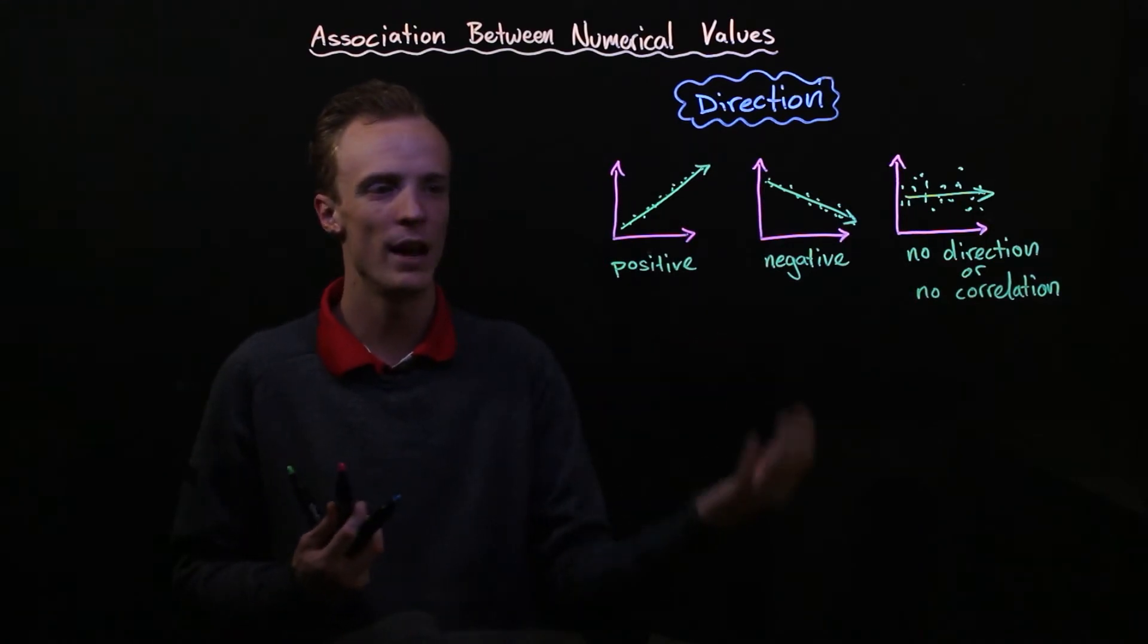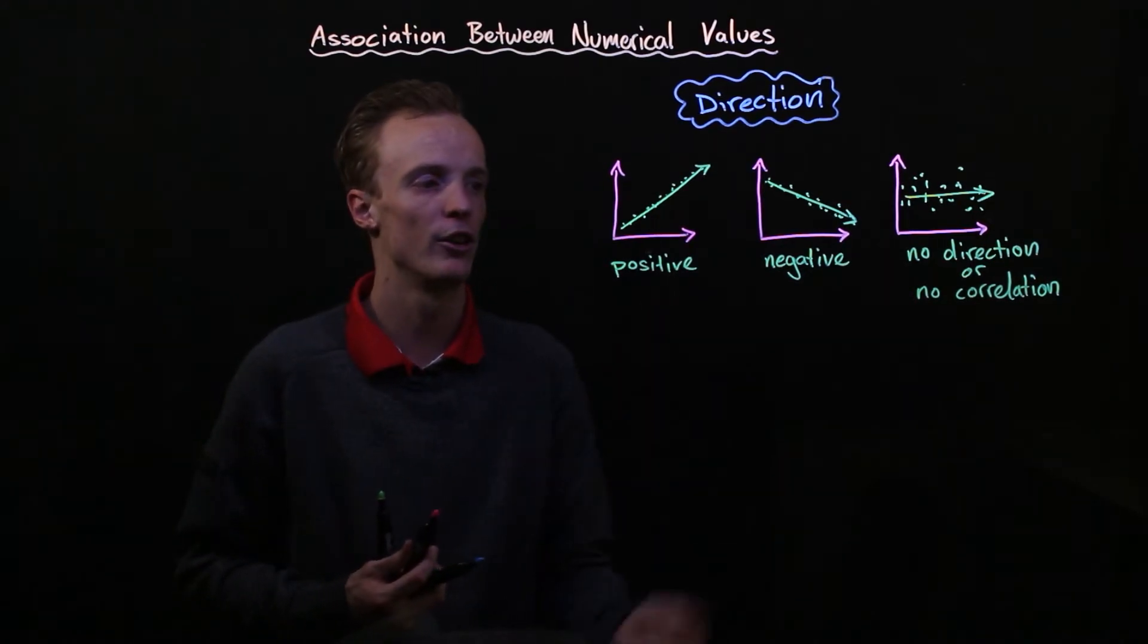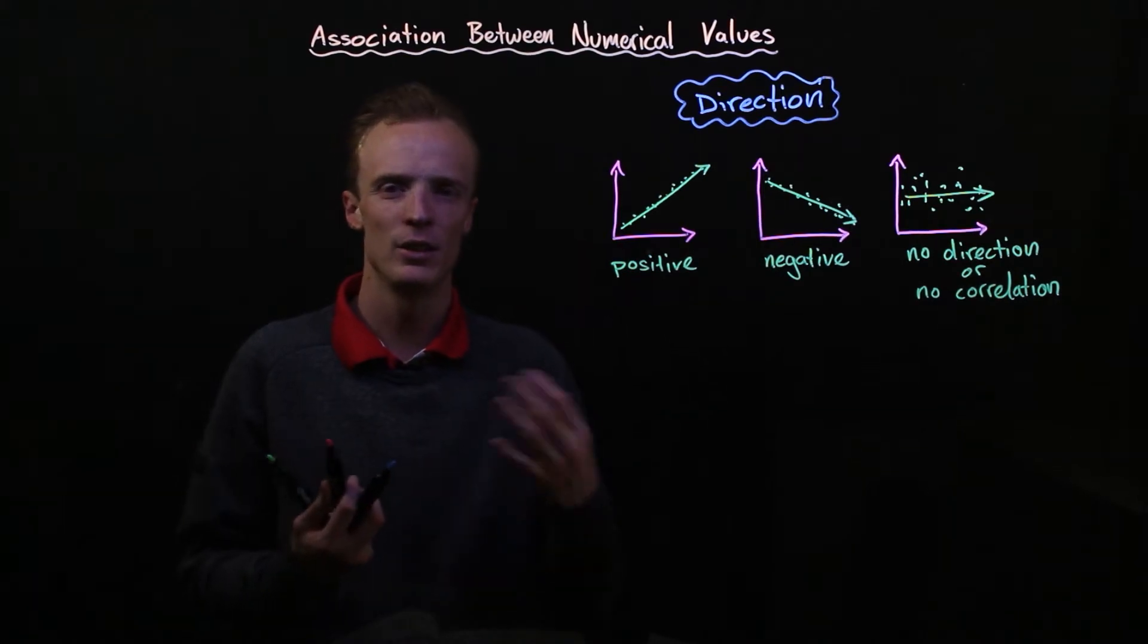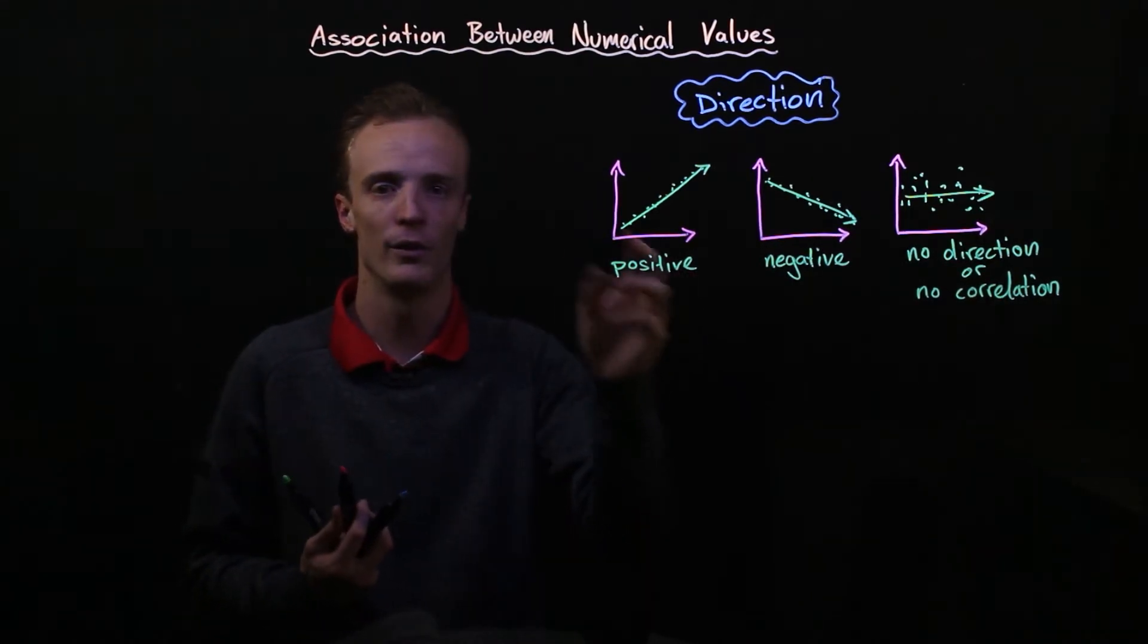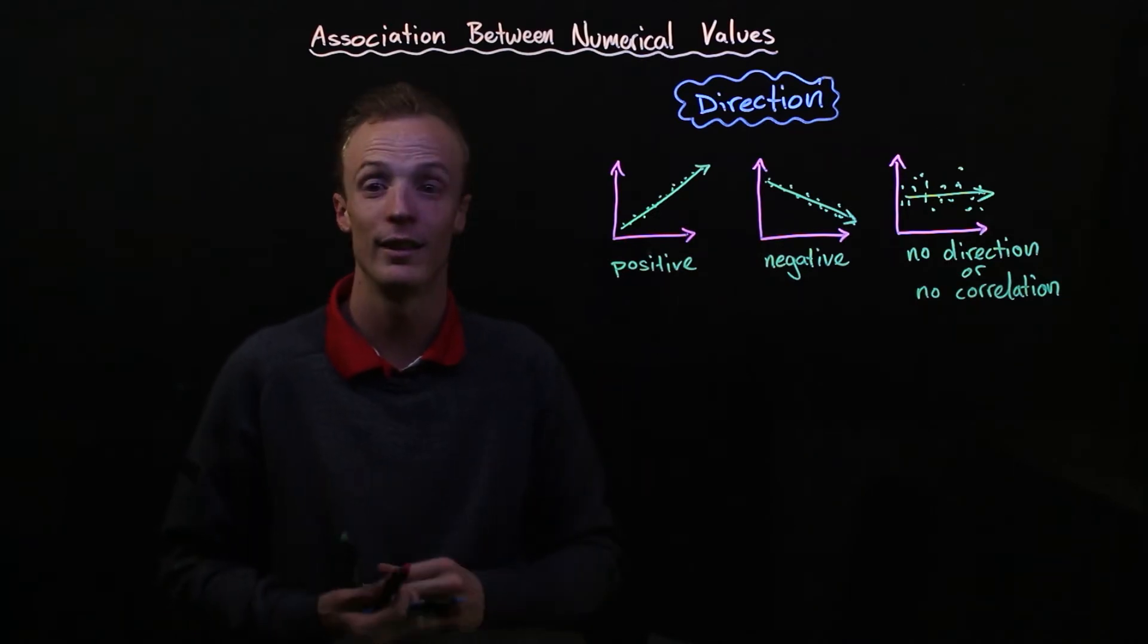Now assuming that we do have a direction, either a positive direction or a negative direction, there's also a strength to the correlation between our response and explanatory variables. Let's take a look at that.